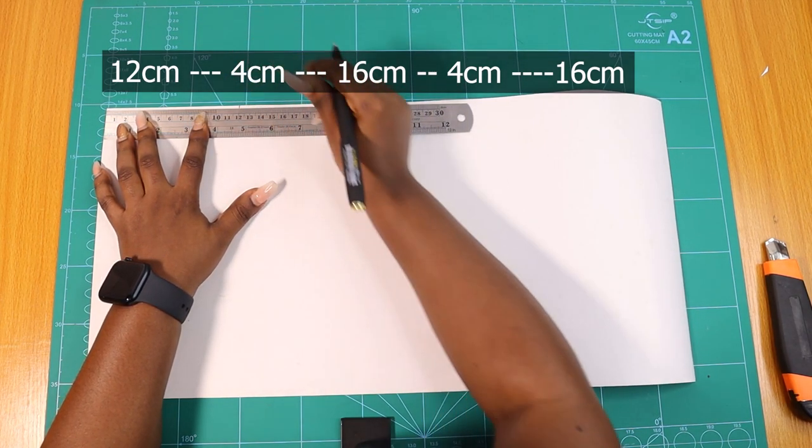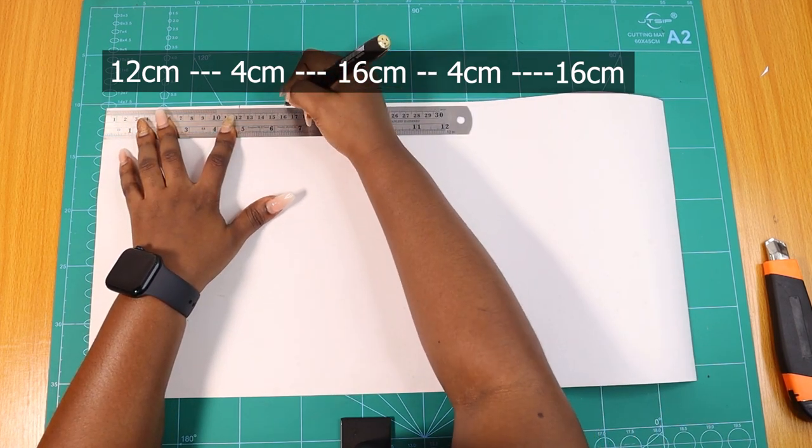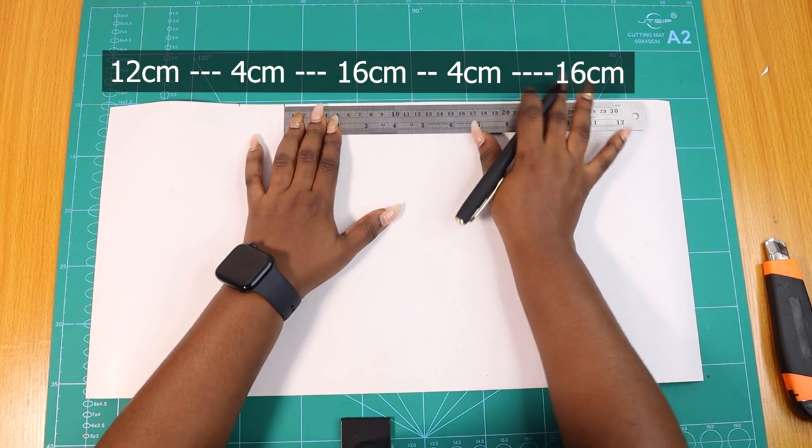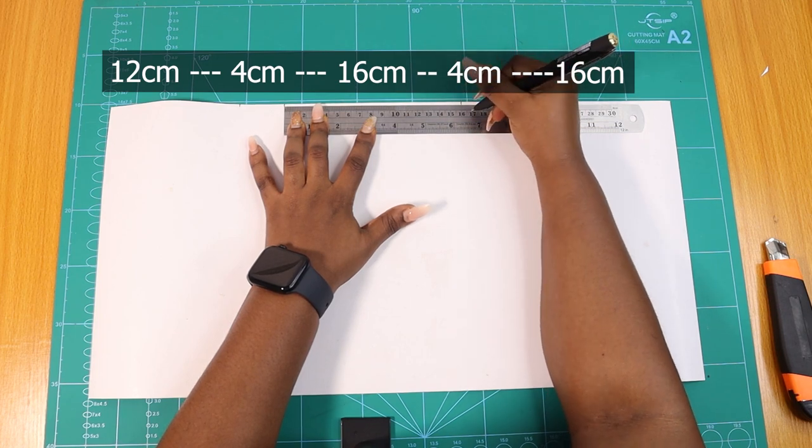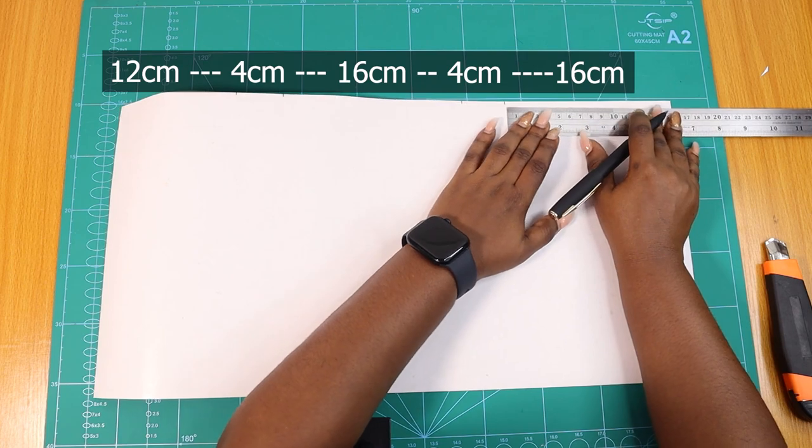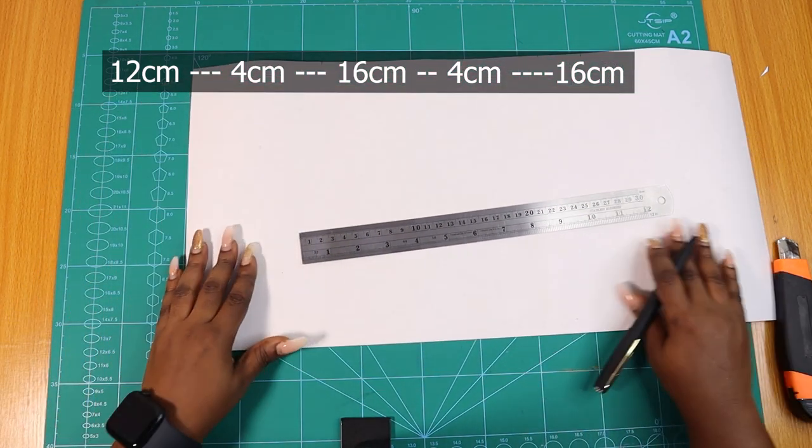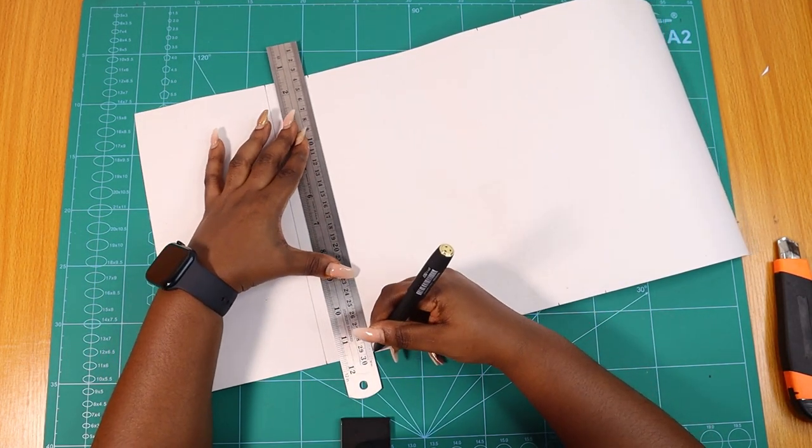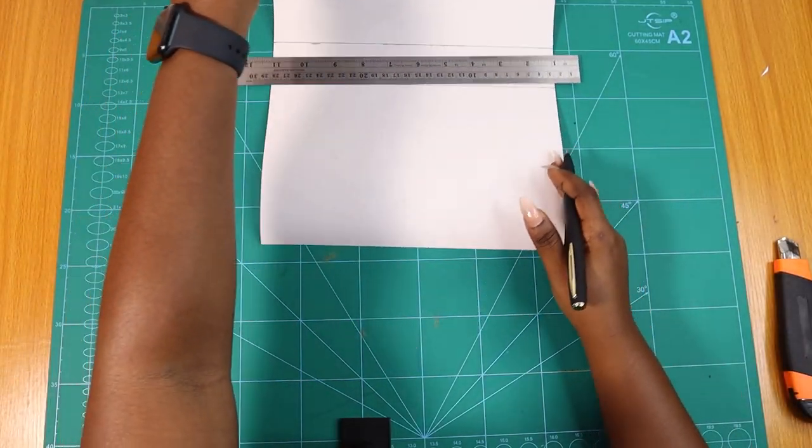This is our cut piece, but first, before we start working on it, we're just going to mark out 12, 4, 16, 4 centimeters again, and 16 centimeters. This is basically from left to right: the flap, the top, the back, the bottom, and under the flap. This way you can visualize our finished project. I'm just going to do the same thing on both sides, then join all the points.